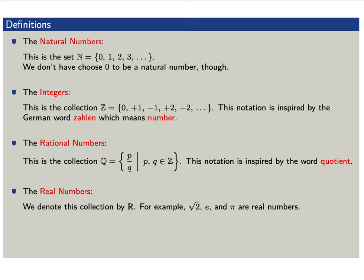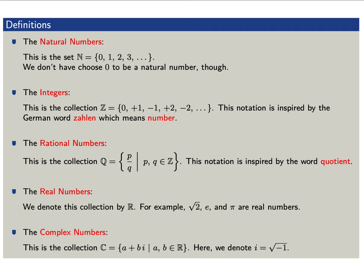For example, the square root of 2, the number e, and the number pi are examples of real numbers. Today, we're going to introduce the collection of complex numbers, which we'll denote by capital C. These are numbers of the form a plus bi, where a and b are real numbers, and i is formally the square root of minus 1.